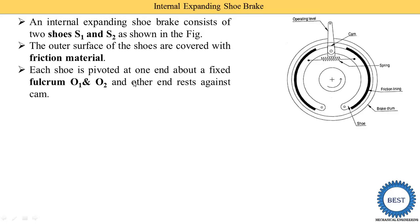Each shoe is pivoted at one end about a fixed fulcrum O1 and O2, and the other end rests against the cam. This is the fulcrum O1 — suppose this is shoe 1, then this is O1. This is shoe 2, this is fulcrum O2, and the other end of both shoes is connected with the cam, meaning the other end rests against the cam.